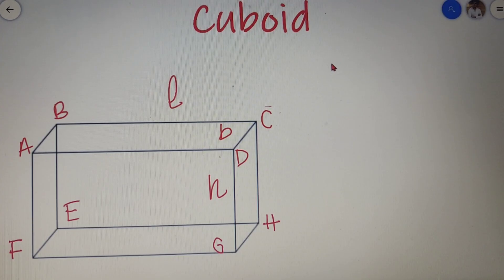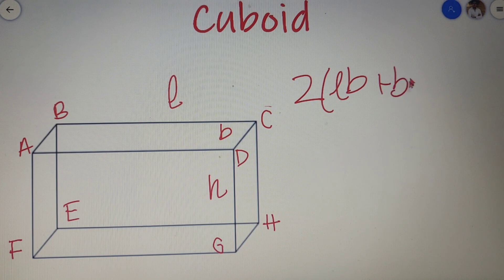The area of a cuboid or the total surface area of a cuboid is equal to twice of L into B plus B into H plus L into H.